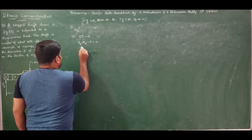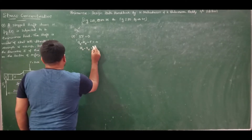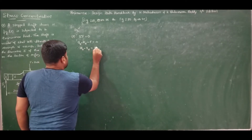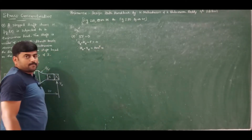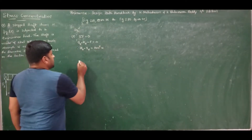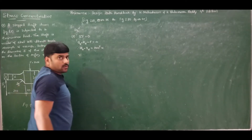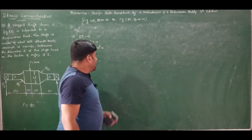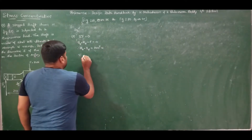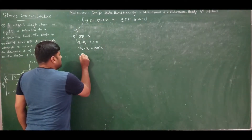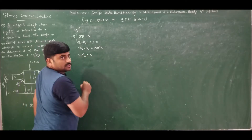From this we get equation 1: Ra + Rb = 8 × 10³ N. The second condition is to take moments about one of the supports and equate to zero to find the other reaction. Let us take the moment about A and equate it to zero.